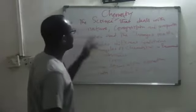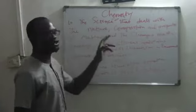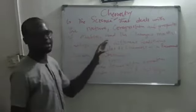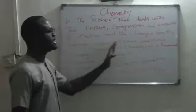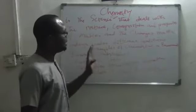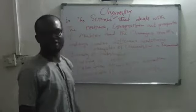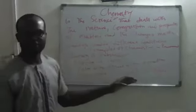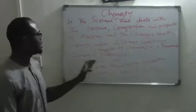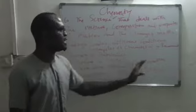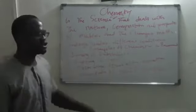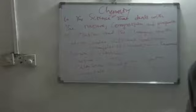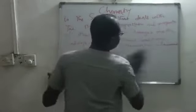So in summary: chemistry is the science that deals with the nature, composition and properties of matter, and the changes matter undergoes under different conditions. Examples of chemistry in everyday life include burning of substances, rusting of iron, palm wine souring after some time, and production of food and fertilizers.